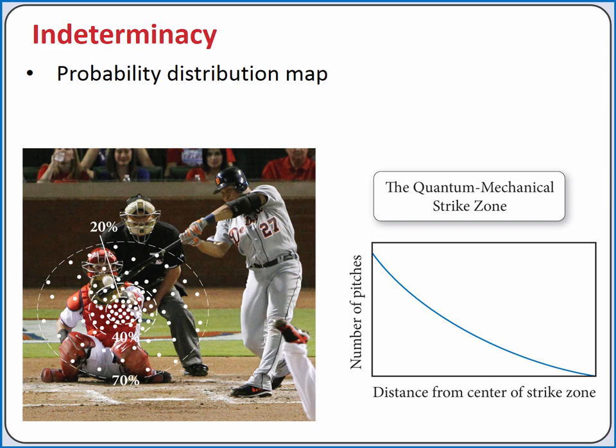Continuing with our baseball analogy, let's say a pitcher throws 1,000 pitches, and we track where those pitches cross the plate. We could come up with a graph that shows how likely a pitch is to cross the plate within a particular distance from the center of the strike zone. This is the idea of a probability distribution map.